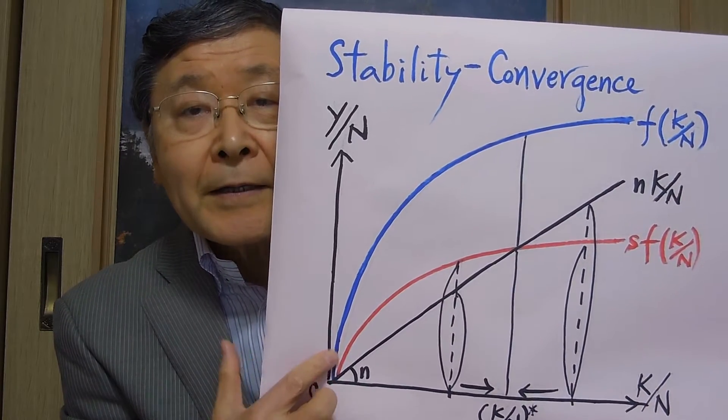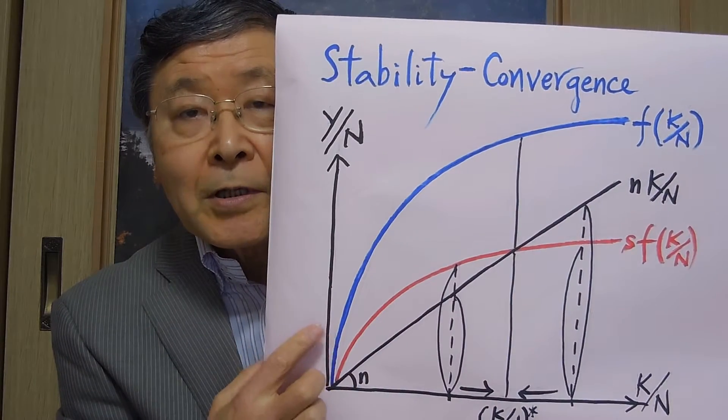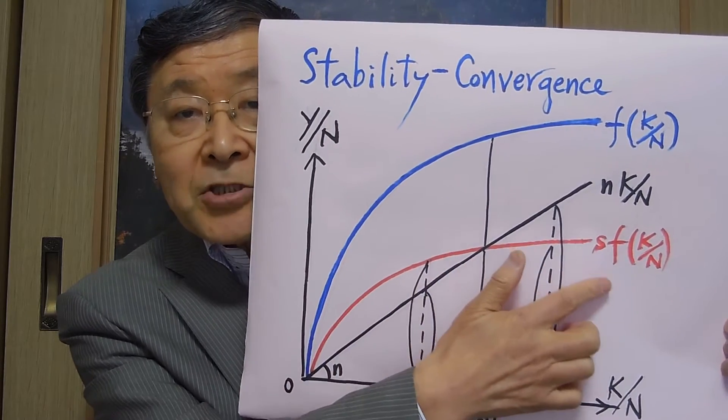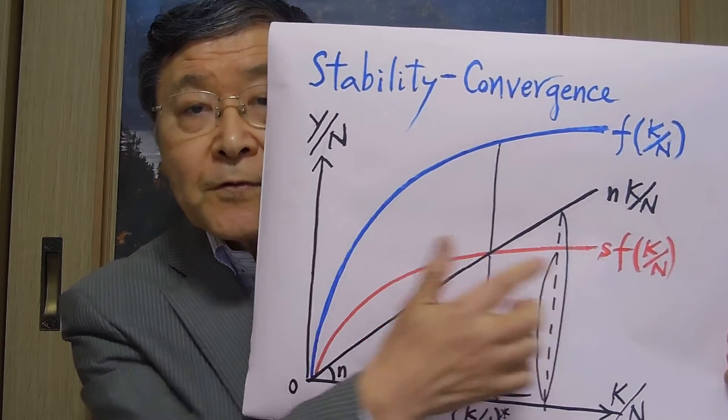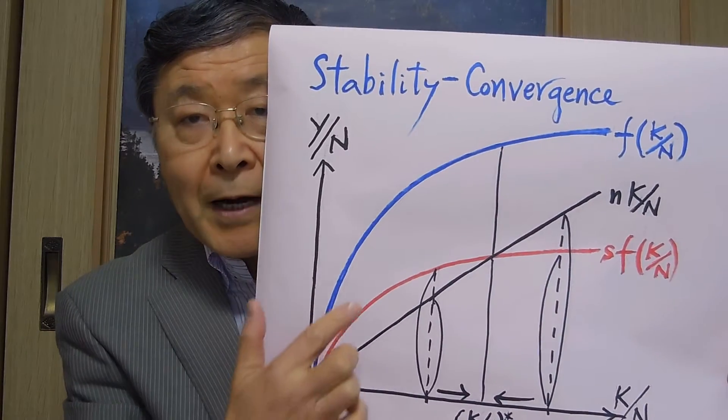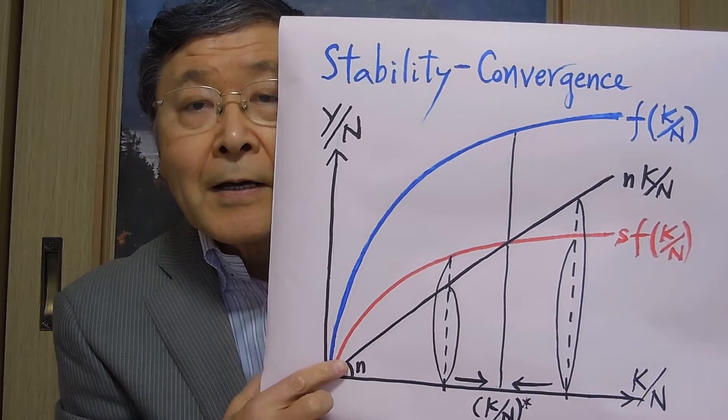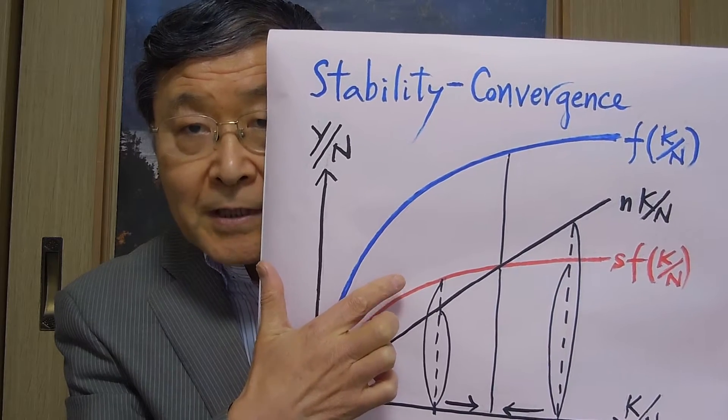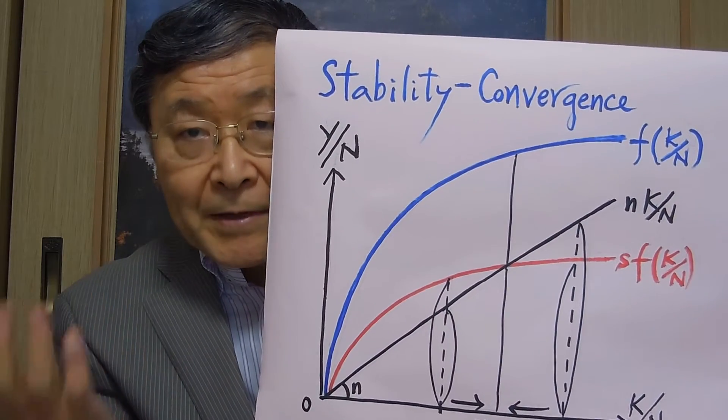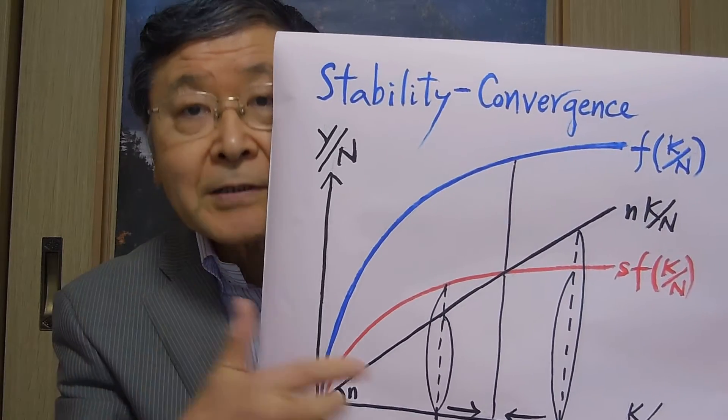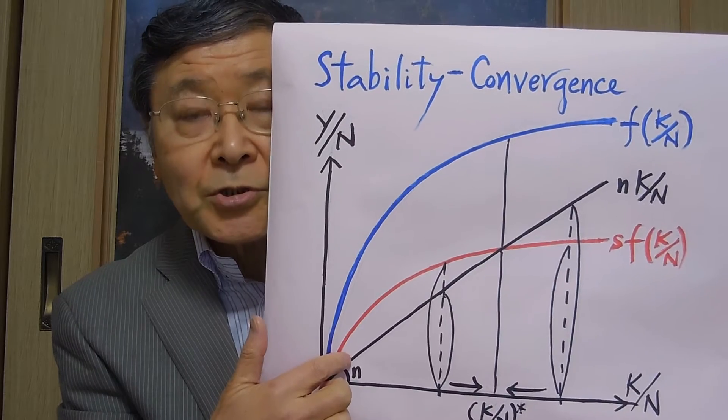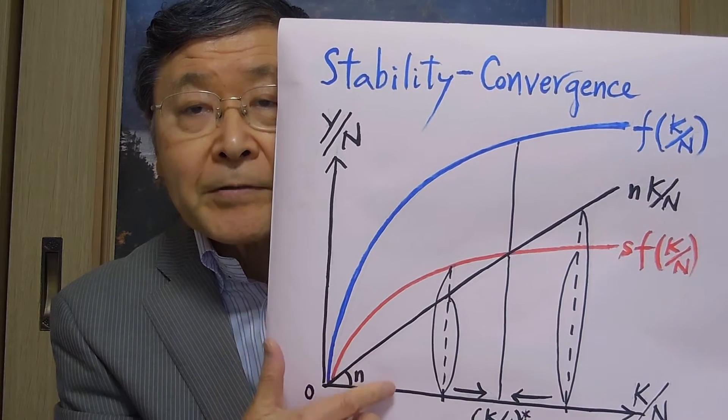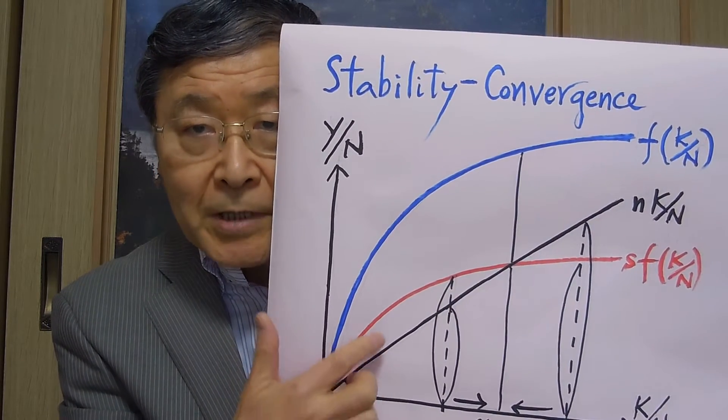So we multiply this output-labor ratio by the constant to come up with this red curve. Here is a fraction S. Therefore, this red curve comes below this blue curve by a constant fraction. This red curve shows the rate of increase in capital stock because investment is financed by savings. And investment means increase in capital stock. Whereas the rate of increase in population is shown by the straight line with the rate of population increase and labor force increase.